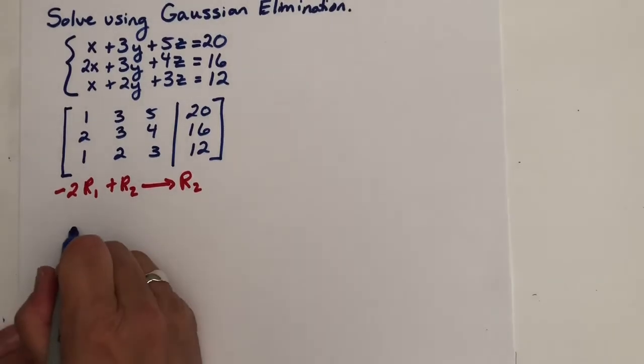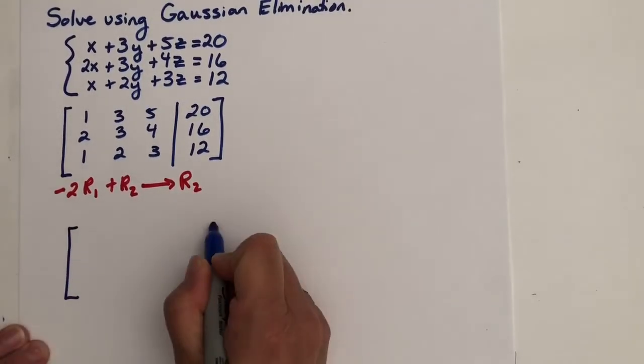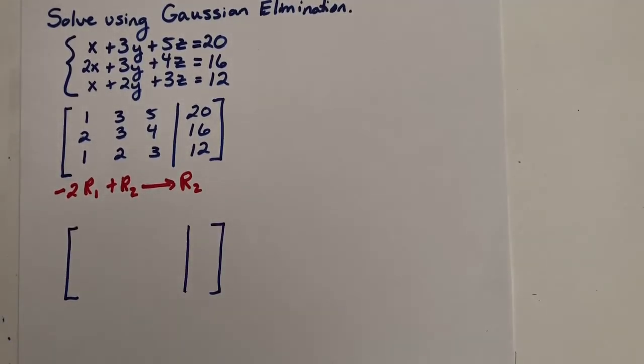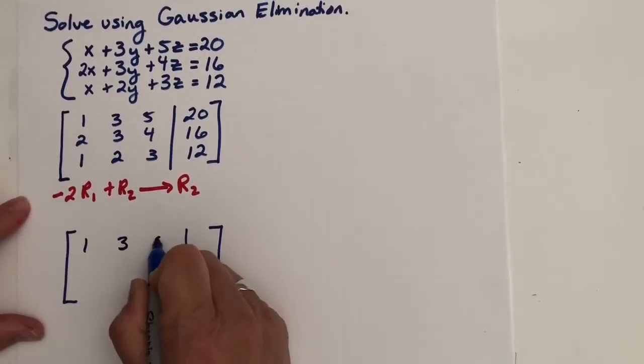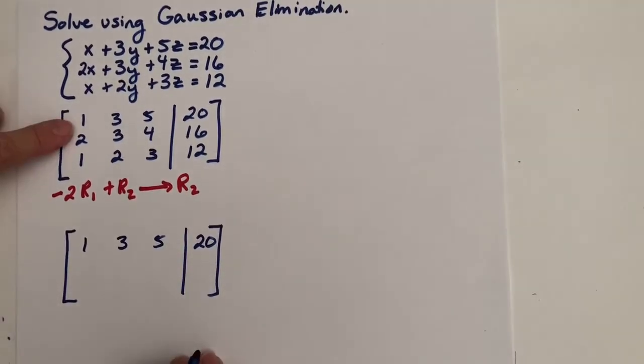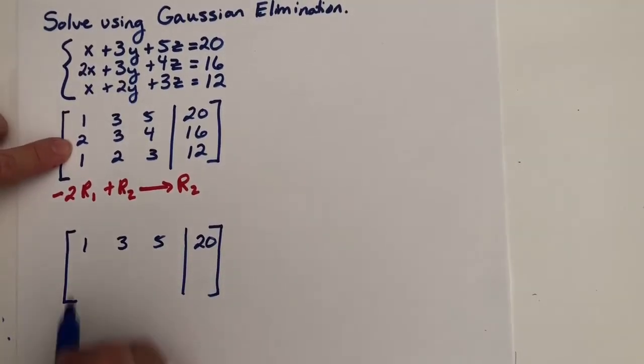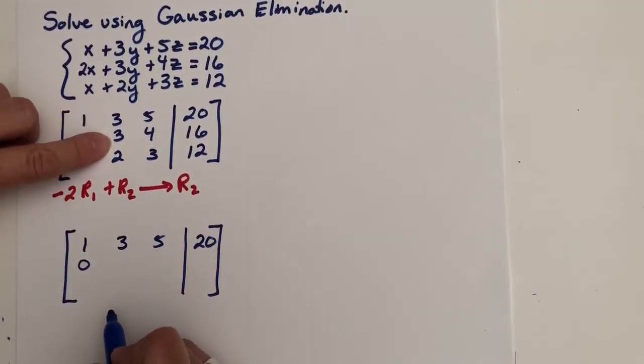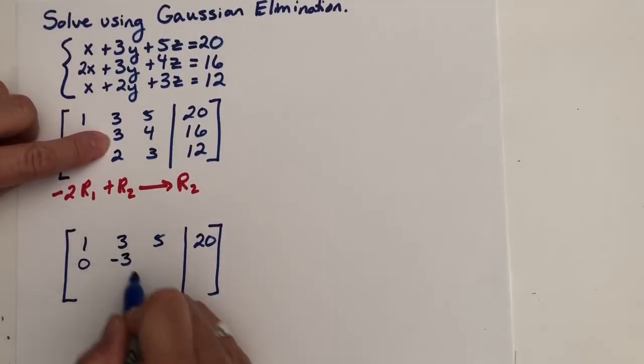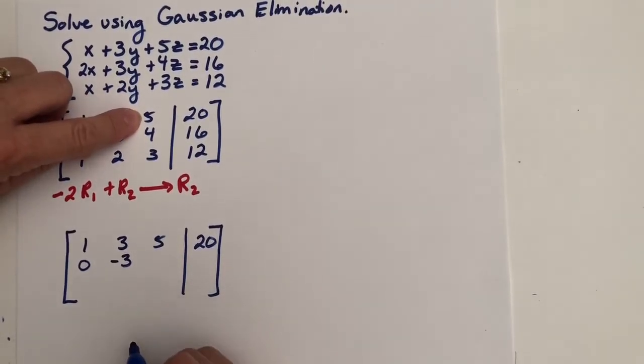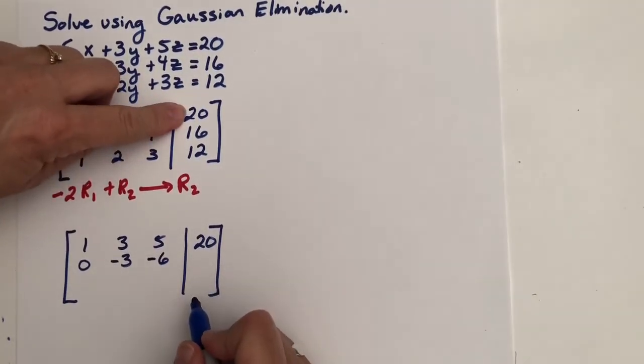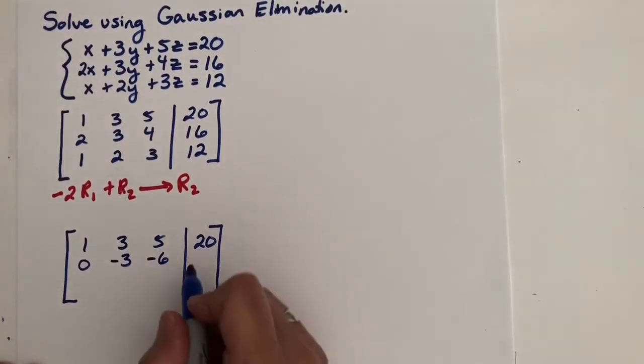So when we do that, and remember you can go to scratch paper to do that calculation, but I hope you've practiced enough that you're getting more comfortable doing that. So we're multiplying by negative 2 and adding. So my row 1 will be unchanged. So when I multiply by negative 2 and add, I get 0. Multiply by negative 2 and that's negative 6 and we add and we get negative 3. Negative 2 times 5 is negative 10 plus 4 is negative 6. Negative 2 times 20 is negative 40 plus 16 is negative 24.